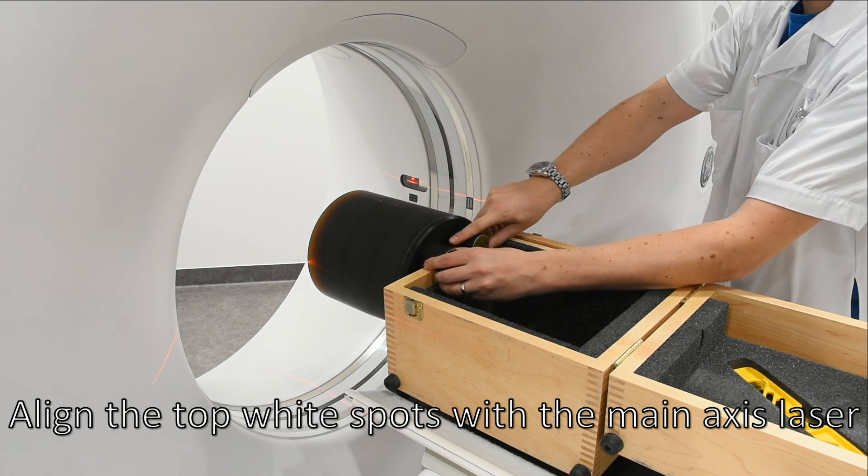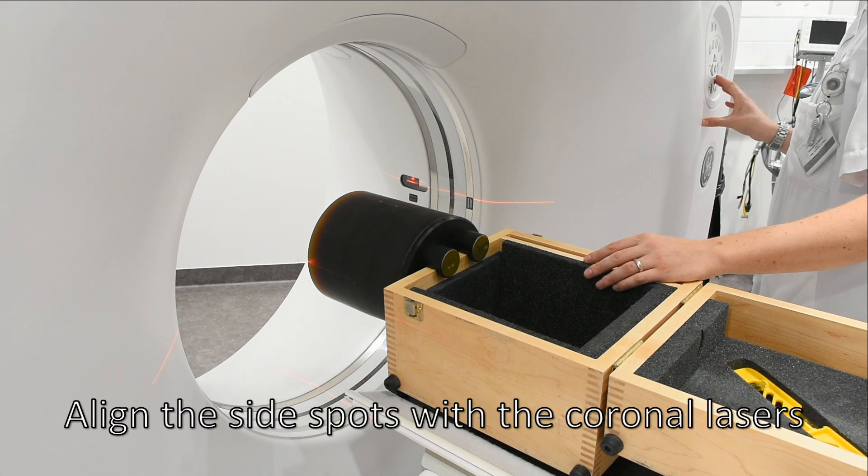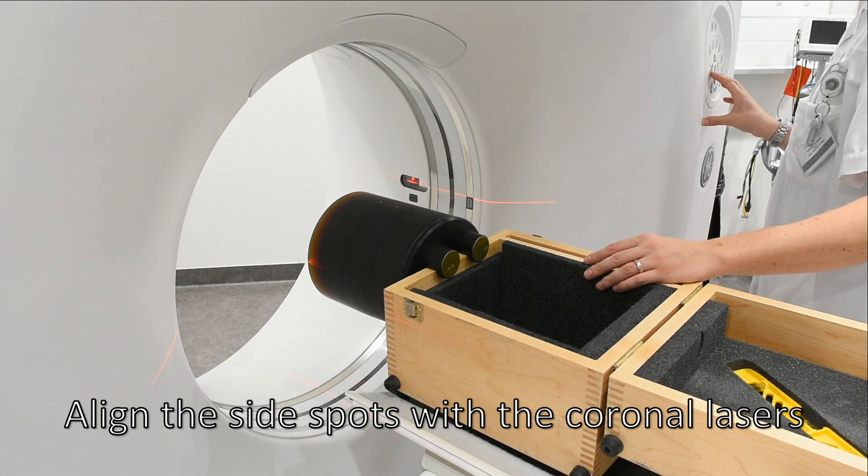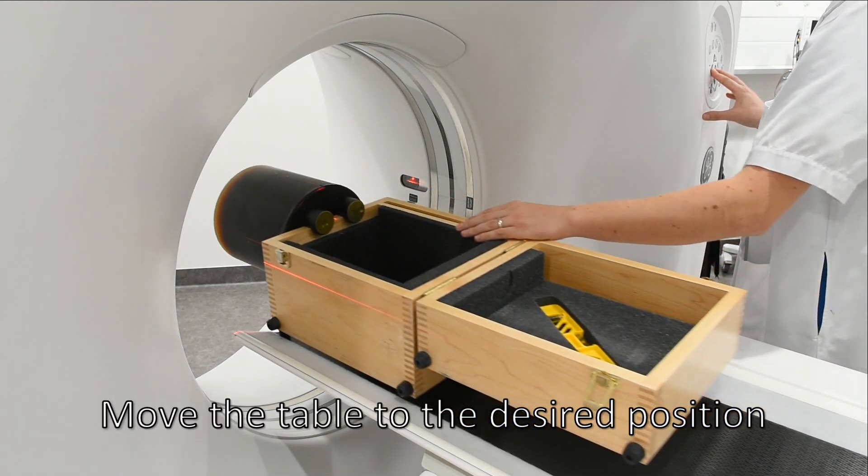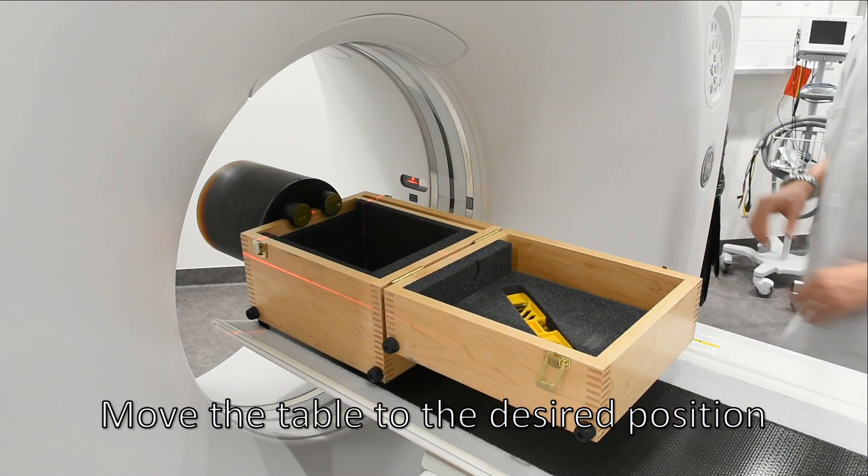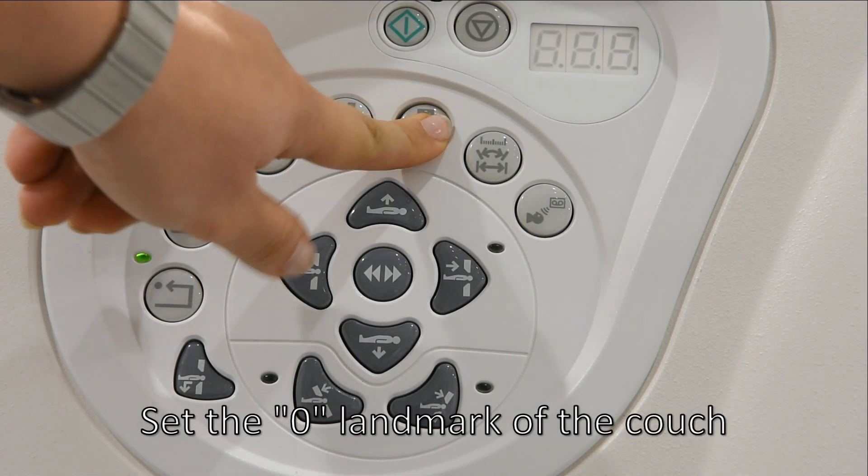Align the top white spots with the main axis laser. Align the side spots with the coronal lasers. Move the table to the desired position. Set the zero landmark of the couch.